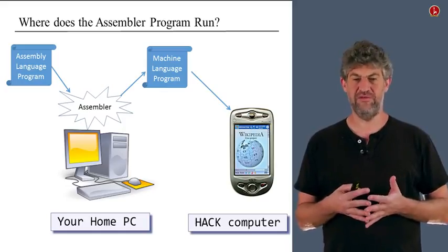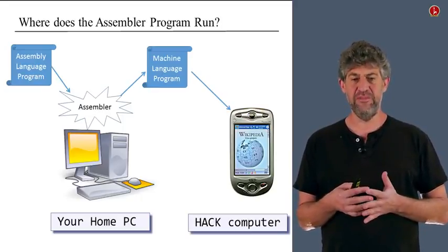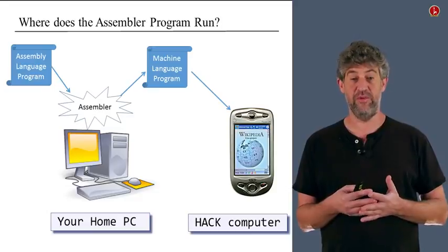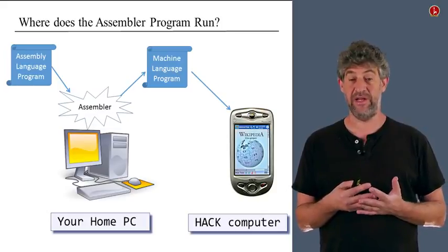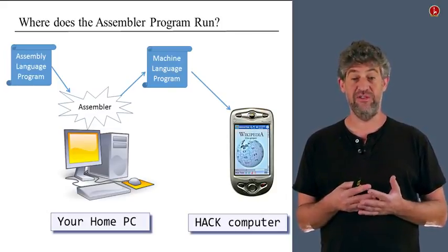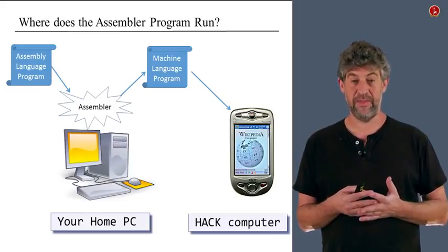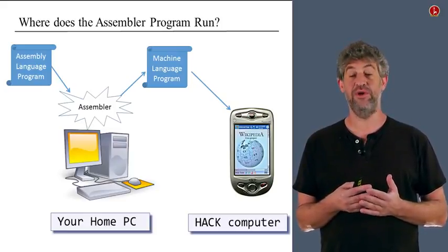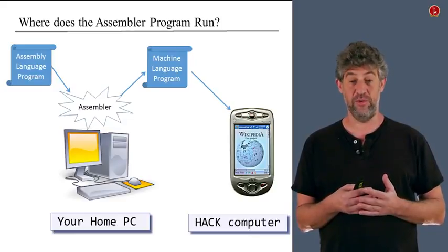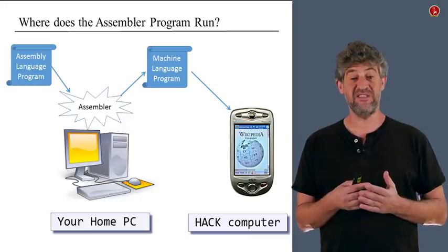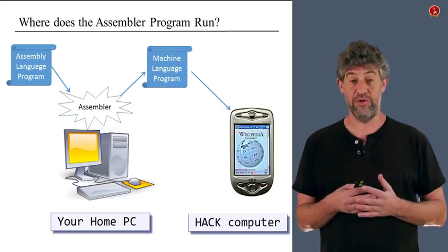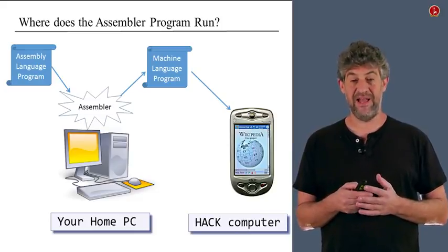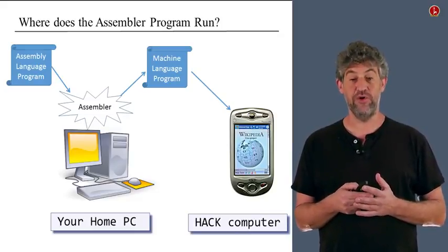So what kind of software is this assembler going to be? In principle, we've only created a computer that can run machine language code, so we should write our program in zeros and ones, which is going to be pretty annoying. But the best way to think about it is that we're not constructing the first computer in the world, but rather the second one. So let us assume we already have a computer that can run some high-level language — your computer and the language you already know — and we'll write the assembler in that language.